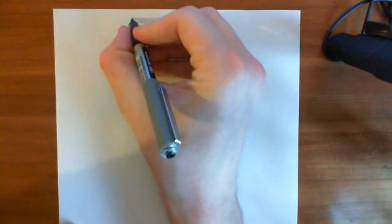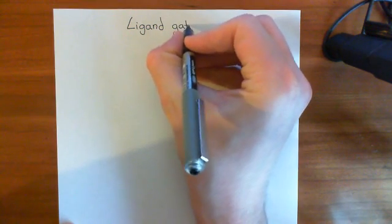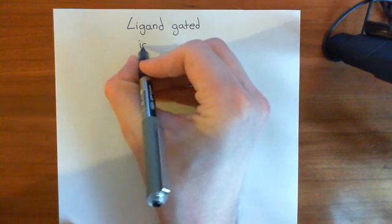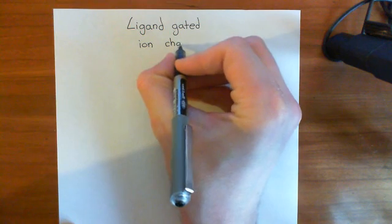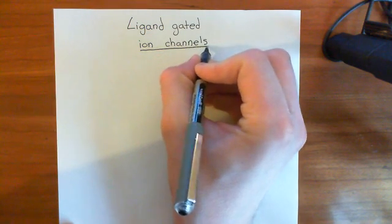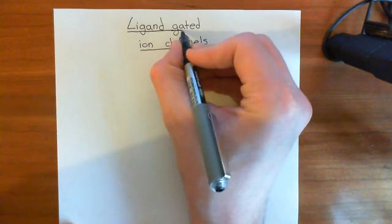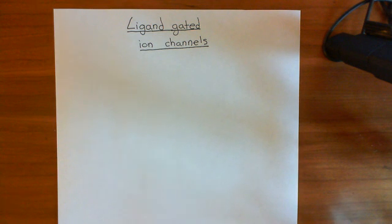Welcome to this first video in the playlist on cis-loop ligand-gated ion channels. In this first video, we're going to talk about the basics of ion channels, specifically ligand-gated ion channels. We're going to introduce ligand-gated ion channels, see the three main different families of ligand-gated ion channels, of which cis-loop ligand-gated ion channels are an example, and look at the different types of cis-loop ligand-gated ion channels and their permeabilities to cations and which neurotransmitters they are sensitive to.